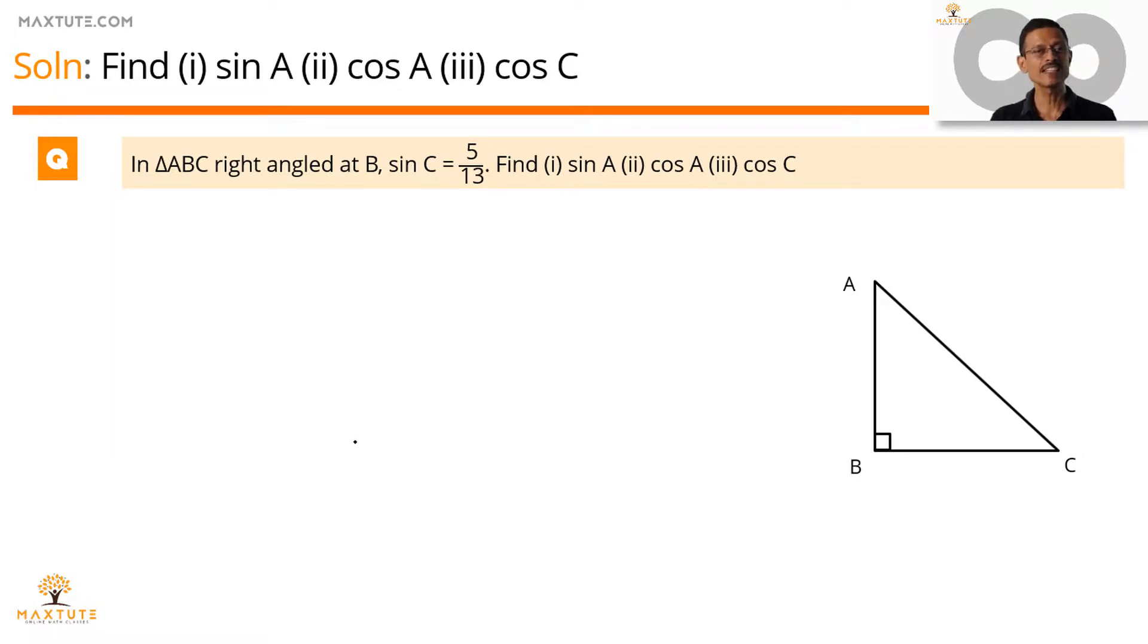What is sin theta? Sin theta is equal to opposite side by hypotenuse. So sin C is going to be equal to the measure of the side opposite to this angle C. This angle C side opposite to it is equal to AB. Hypotenuse is equal to AC. So sin C is equal to AB by AC which is equal to 5 by 13.